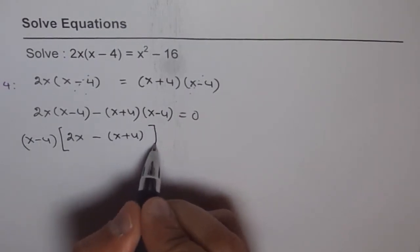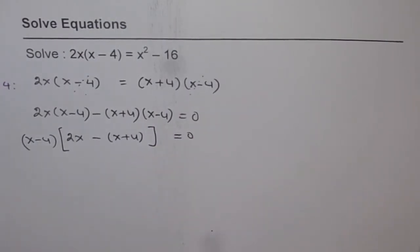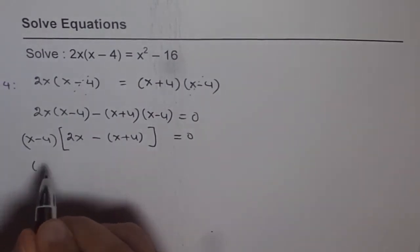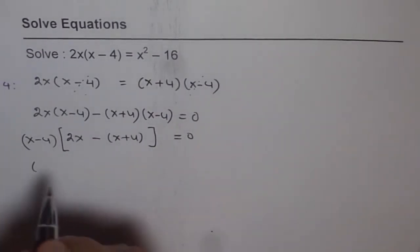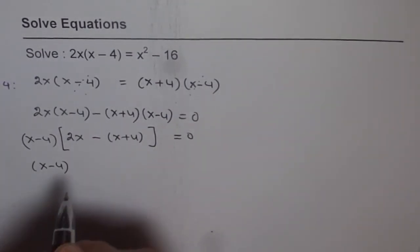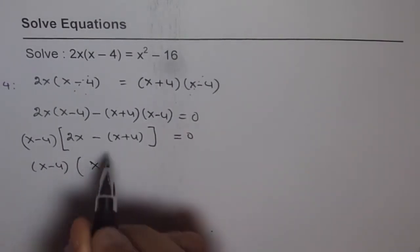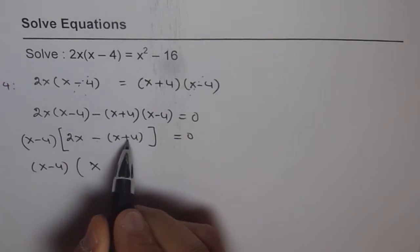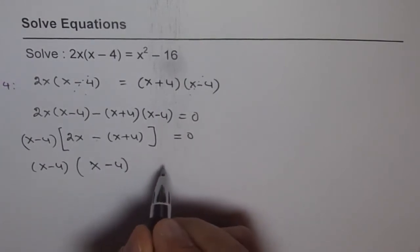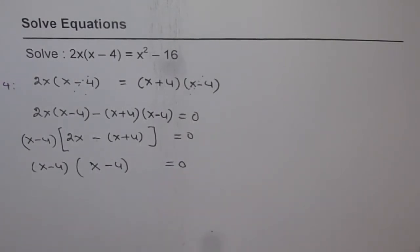x plus 4 equals 0. That is what we get. Now we can just simplify the terms inside the brackets. So we get x minus 4 and inside the bracket we have 2x minus x is x and minus times plus 4 is minus 4.